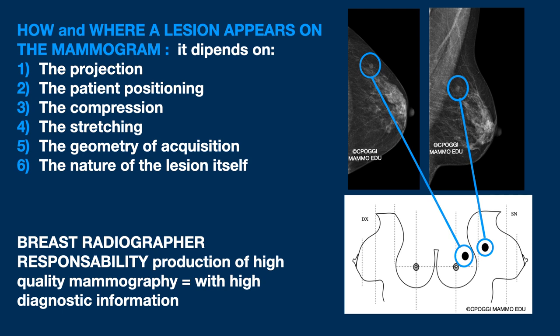How and where a lesion appears on the mammography images depends on several factors beyond the nature of the lesion itself — on the projection of course, but most of all on the work of the mammographer: compression, distension, positioning, acquisition geometry parameters. Our responsibility in producing high-quality images is really, really important.